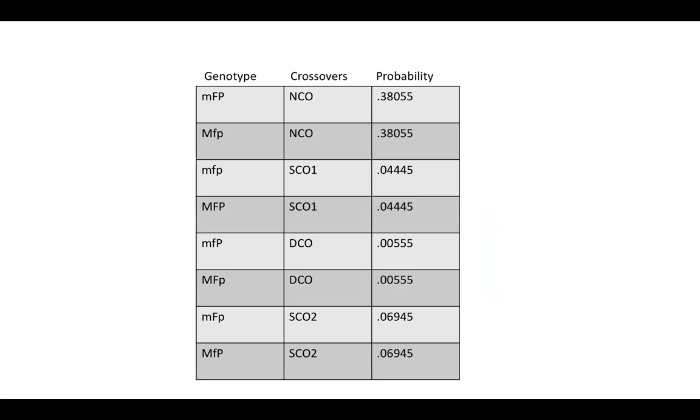So what does a genetic map tell us? A genetic map allows us to see our different genotypes. In this case, we have eight different genotypes. And each genotype results from a crossover. So we have four different kinds of crossovers.